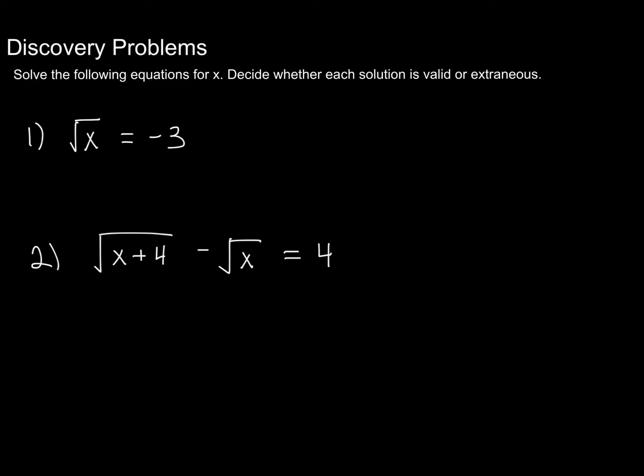All right, so first with number one, when we square both sides of our equation, we're going to end up with a solution of positive nine. However, before we even squared both sides, we should have noticed that there is never going to be a value x such that the square root of x is a negative value.